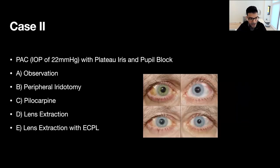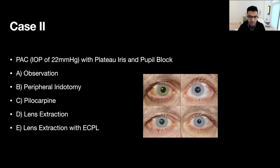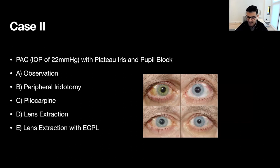Case number two: a patient with primary angle closure with a slightly high pressure of 22 mmHg with what appears to be a plateau iris configuration as well as some pupil block. Results were varied: 30% recommended peripheral iridotomy, 31% pilocarpine, and 9% observation. I think all these options would be reasonable depending on patient risk tolerance. With that rising pressure, I'm likely heading away from observation and towards peripheral iridotomy to start. If the pressure still persists after that, probably pilocarpine. But if there was an existing cataract, I think that would be a reason to proceed with lens extraction, though I'm probably not heading to lens-based surgery just for plateau iris management given there is no true glaucoma at this point.